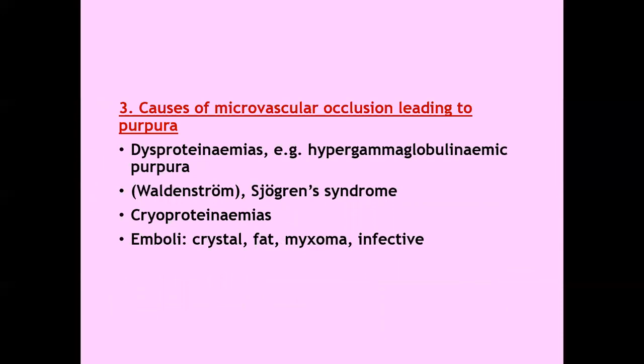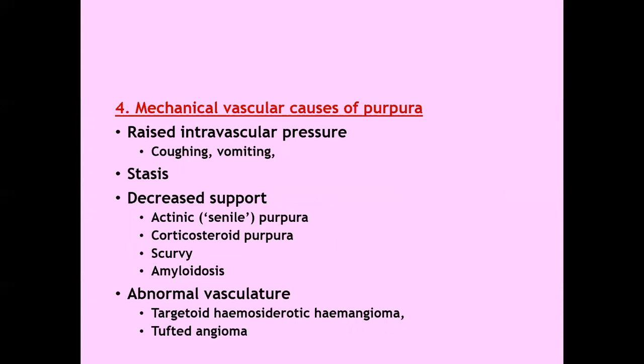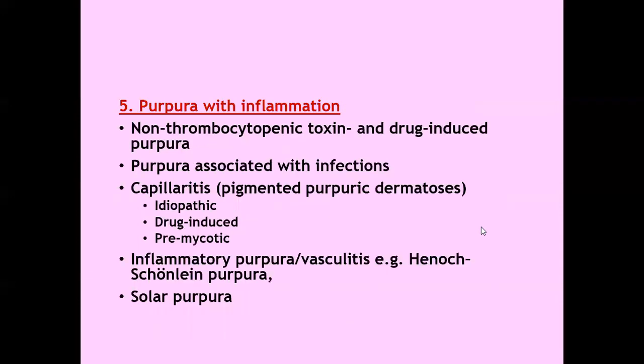Causes of microvascular occlusion leading to purpura include dysproteinemias such as hypergammaglobulinemic purpura, Waldenström's macroglobulinemia, Sjögren's syndrome, cryoproteinemias, and emboli including crystal emboli, fat, myxomas, or infective emboli. Mechanical vascular causes include raised intravascular pressure like coughing and vomiting, stasis, decreased support of blood vessels as in actinic or senile purpura, corticosteroid purpura, scurvy and amyloidosis, and abnormal vasculature like targetoid hemosiderotic hemangioma or tufted angiomas.